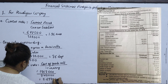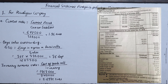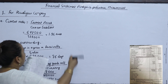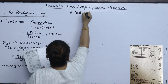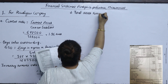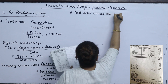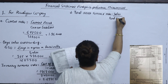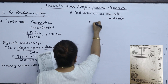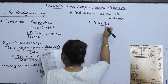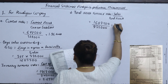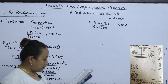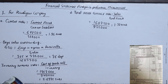The inventory turnover ratio is calculated using cost of goods sold. The total assets turnover ratio result is 1.72 times.